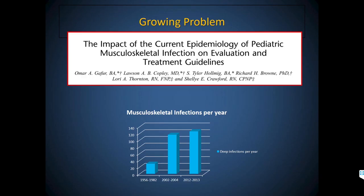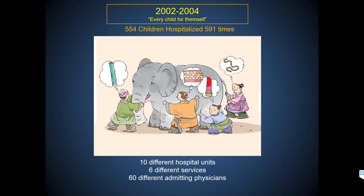A historic study at Children's by Mary Ann Jackson and John Nelson showed the relative incidence of bone and joint infections. When we studied it again we realized there'd been a 600% increase in just a 20-year period, far more than the population growth in that window. What we really discovered as we dove into the details is that care at our institution was literally all over the map — children admitted to 10 different hospital units on six different services to 60 different admitting physicians.